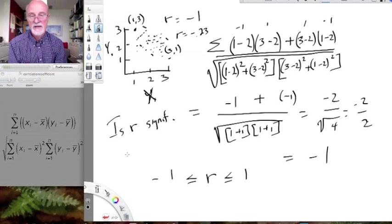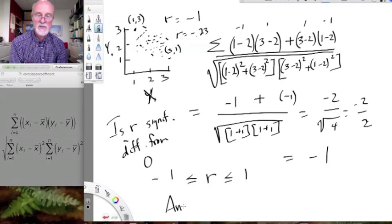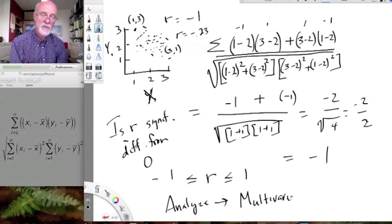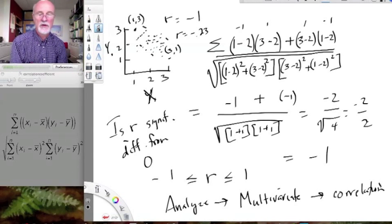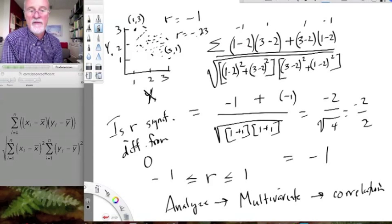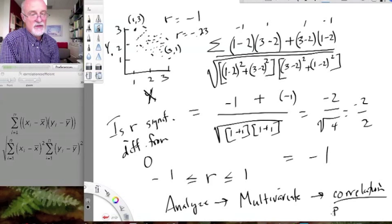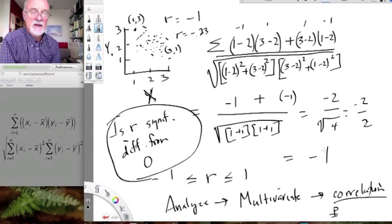And the question becomes, is r significantly different from 0? And this is where we use our analyze menu, multivariate, and from multivariate you'll choose correlation. And it will produce a correlation matrix of however many variables you want. It'll produce r values and it will give you p values associated with that r value to test whether the r is significantly different from 0, testing the null hypothesis.